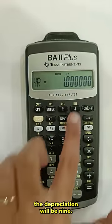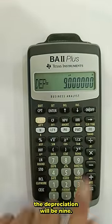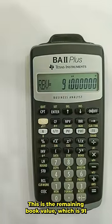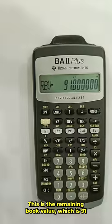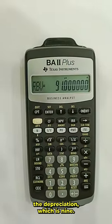So, for the first year the depreciation will be 9. This is the remaining book value which is 91 in our example, 100 minus the depreciation which is 9.